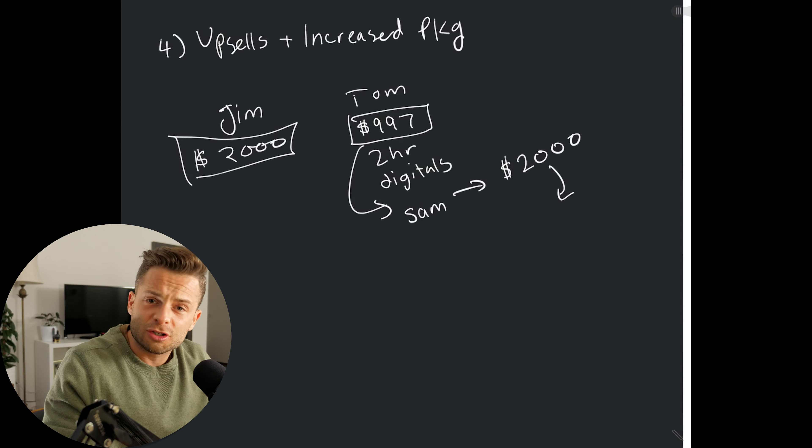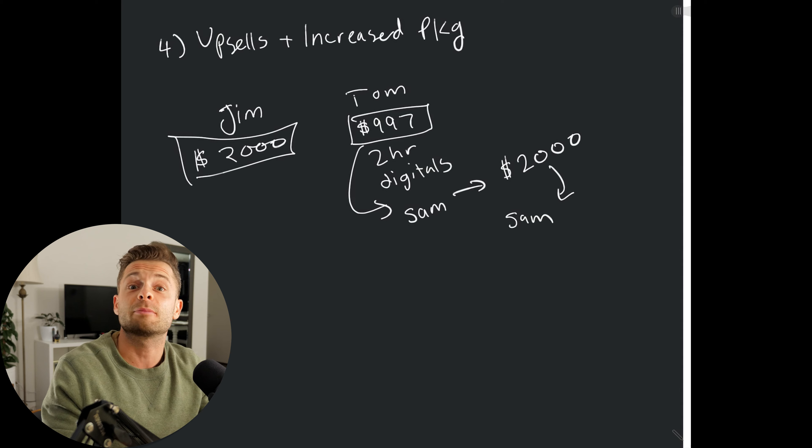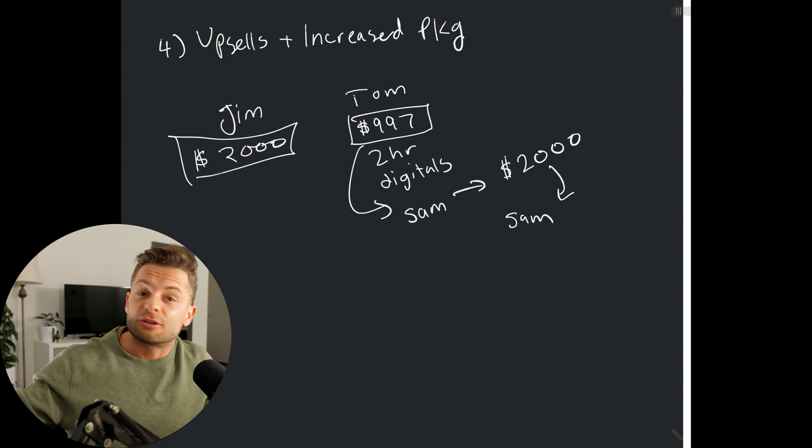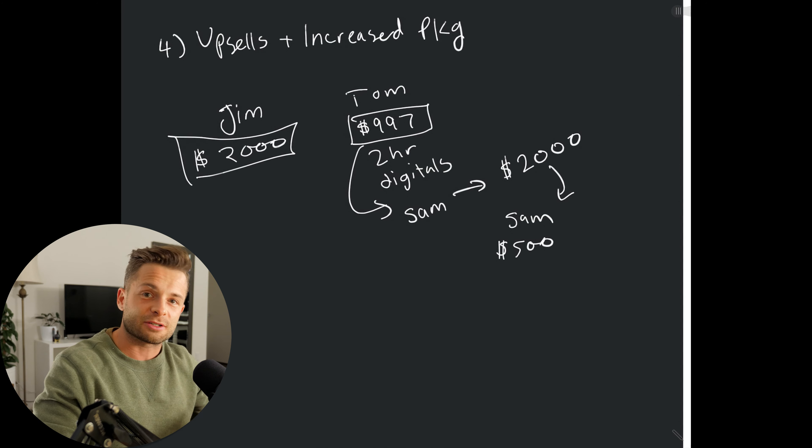And so, Tom does the shoot, and then afterwards, Sam comes in to see the prints, and Tom says, you know what, I have some amazing wall art and flat prints that we could sell you, and would you be interested in that kind of a thing? And Sam buys another $500 worth of product, right? So that's how we can increase our LTV by offering upsells, different packages, nothing new, right?